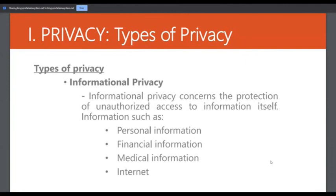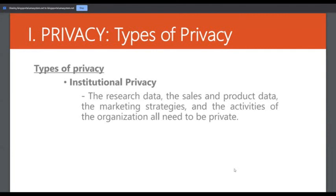Financial and medical information should also be secured. We also have institutional privacy, where research data, sales and product data, marketing strategies, and the activities of an organization all need to be kept private. When developing a system or automated computerized system for a company, you must ensure that the institutional privacy of that organization is secured.